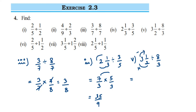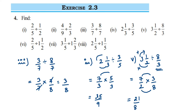Division becomes multiplication; take the reciprocal of 8 by 3, which is 3 by 8. We cannot cancel any numbers, so multiply: 7 threes are 21, and 2 eights are 16. The answer is 21 upon 16.